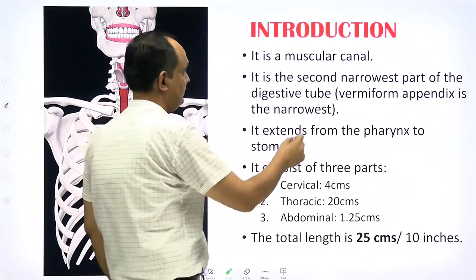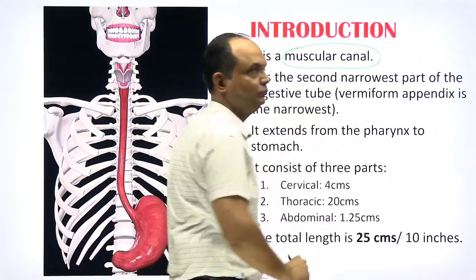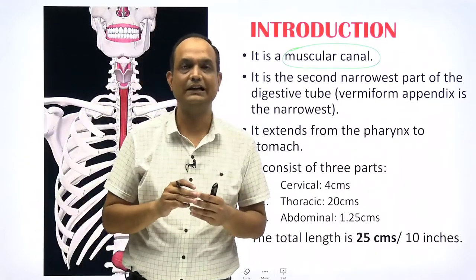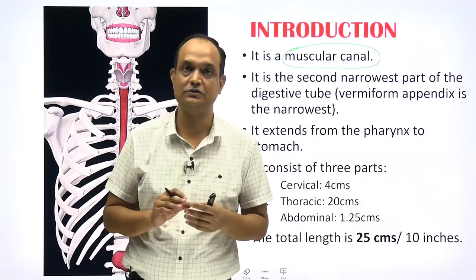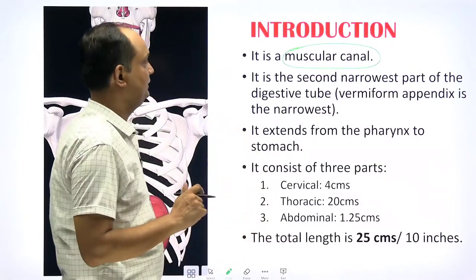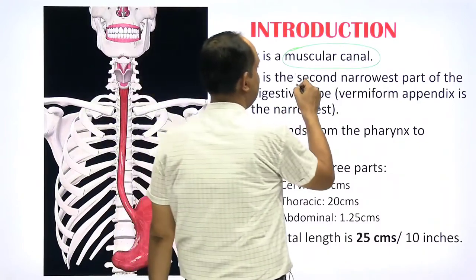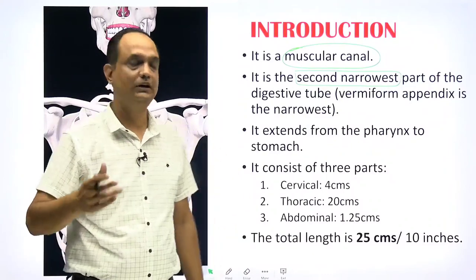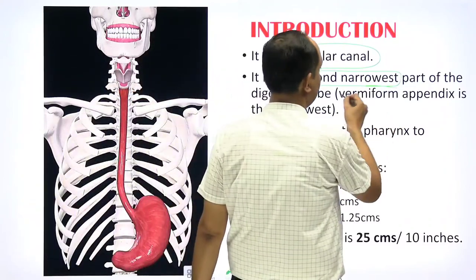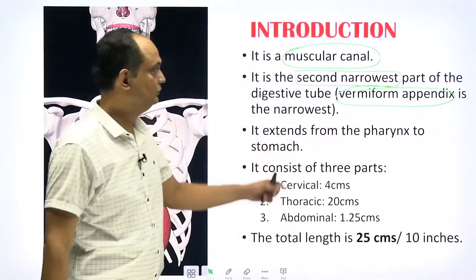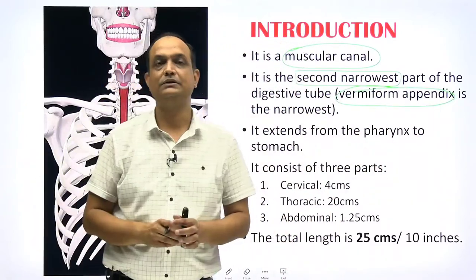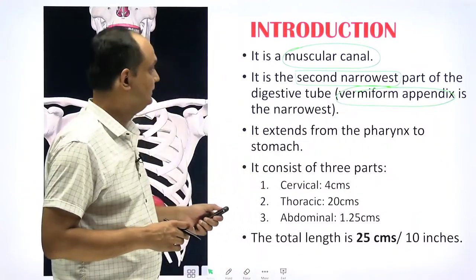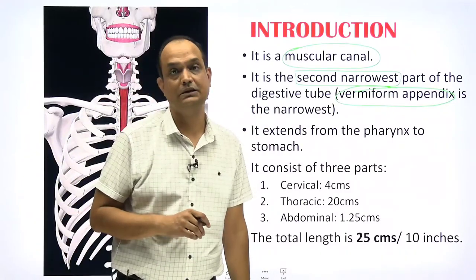What is the esophagus? It is a muscular tube, made up of muscles — smooth muscles as well as skeletal muscles, as seen in the histology of the esophagus. An important point: it is the second narrowest part of your digestive tube. The narrowest part is the vermiform appendix, and the second narrowest is the esophagus — a common exam question.